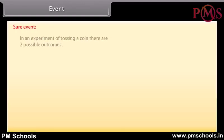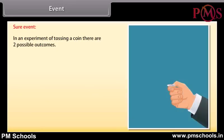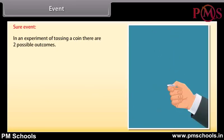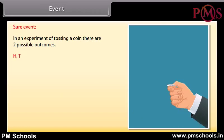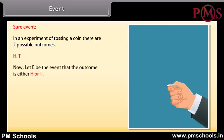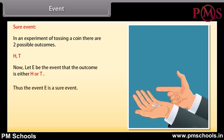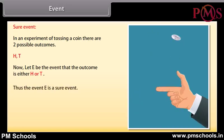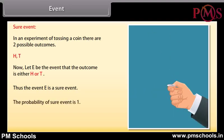Sure event: In an experiment of tossing a coin, there are 2 possible outcomes: H and T. Let E be the event that the outcome is either H or T. Thus, the event E is a sure event. The probability of a sure event is 1.